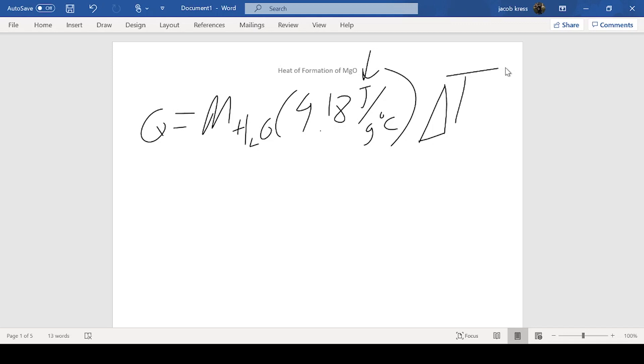The last variable is delta T, which is our change in temperature. I'll give you that data toward the end of this video. As you can see, we need the mass of the water here. The way we can do that is using the density of the solution.